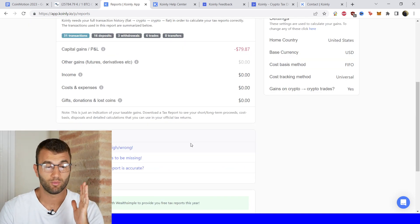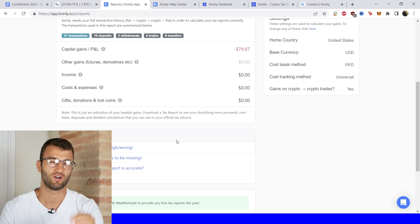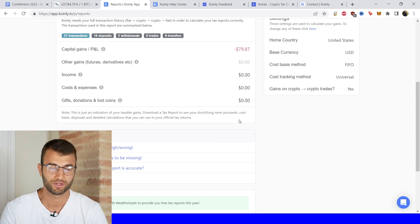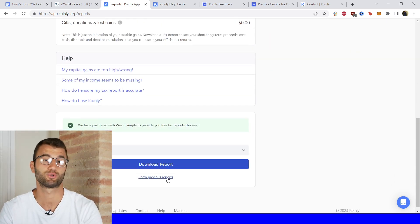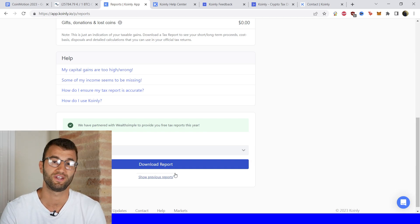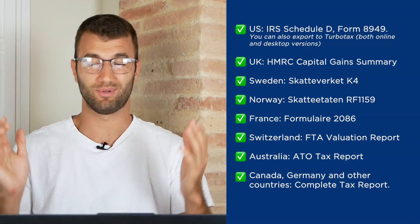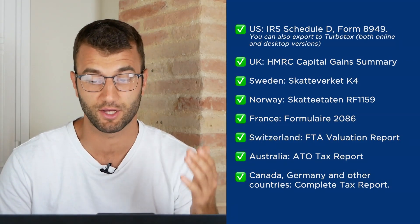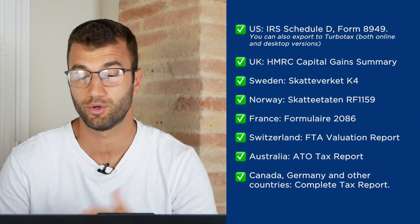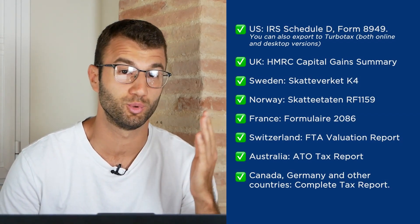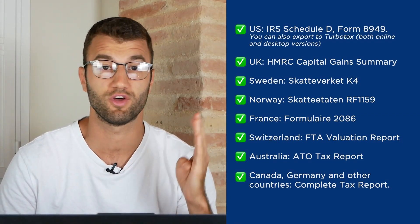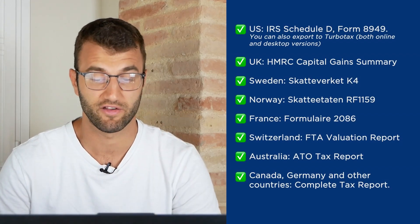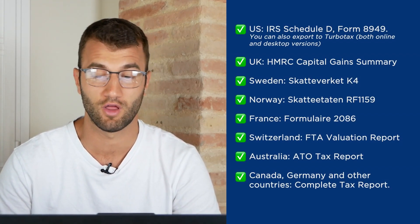Once you're happy with your capital gains, your income, your costs and expenses, all that information, scroll on down and select a tax report that's appropriate for your needs. Tax reports — we have plenty. For the US, we have the IRS Schedule D form 8949. You can also export to TurboTax, both online and desktop versions. I've made videos on that.